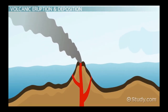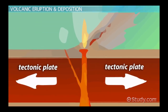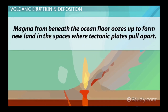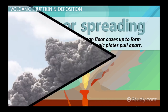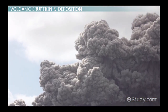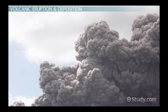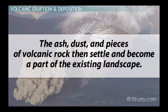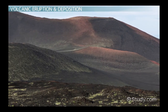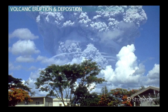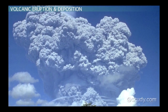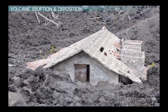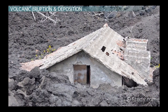While a few undersea volcanoes grow big enough to become islands, most become mountain ranges on the seafloor where tectonic plates spread apart or crash together. Magma from beneath the ocean floor oozes up to form new land through seafloor spreading. In addition to lava, volcanoes above ground spew ash and dust, which settle near the volcano or get picked up by wind, then become part of the existing landscape. When Mount Pinatubo erupted in 1991, so much dust and ash was released that roofs collapsed and fields of crops were destroyed.